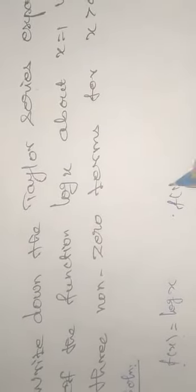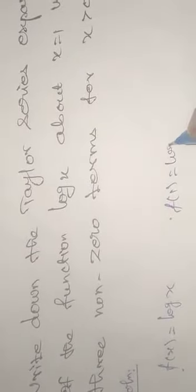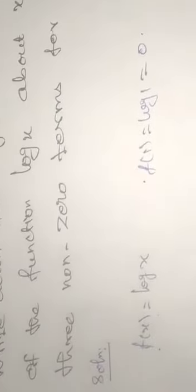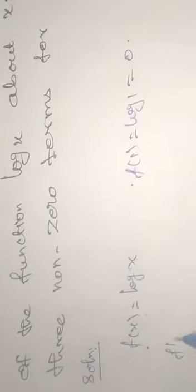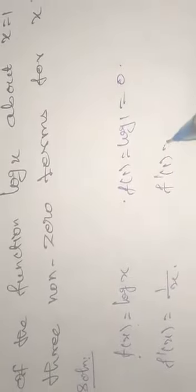f of 1 equals log 1, which gives the value 0. Then f dash of x — the differentiation of log x — gives 1 by x. So f dash of 1 equals 1 by 1, giving the value 1.